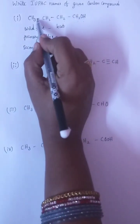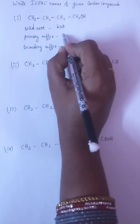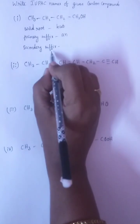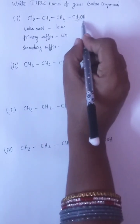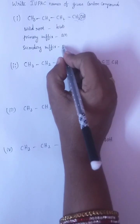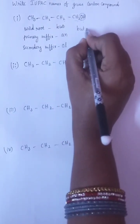Primary suffix is, if you observe the bonds in between here, there are all single bonds, so that's why we have to write it as AN, alkane. Next secondary suffix. Here functional group is OH, OH is nothing but alcohol. For alcohol we will write OL. So the name will be butanol.